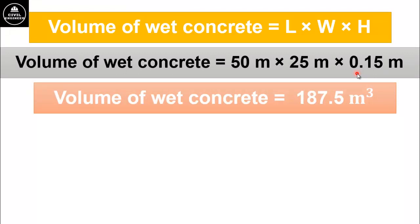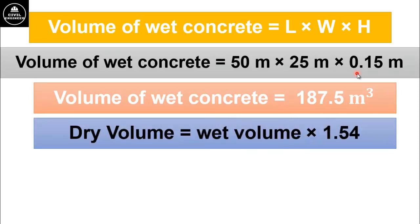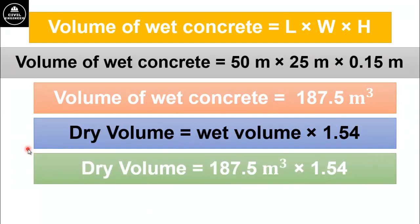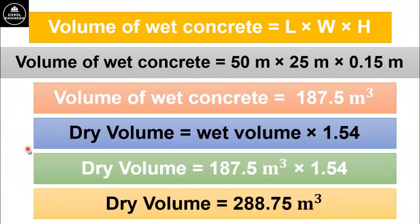Now this is the wet volume of concrete. To calculate dry volume of concrete, just multiply the wet volume by 1.54. This 1.54 is the conversion factor for converting wet volume into dry volume. So we get dry volume as 187.5 cubic meters multiplied by 1.54, which is equal to 288.75 cubic meters.